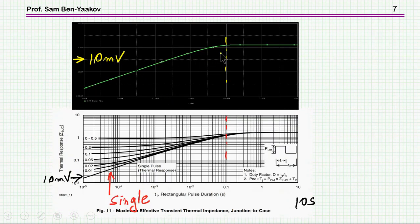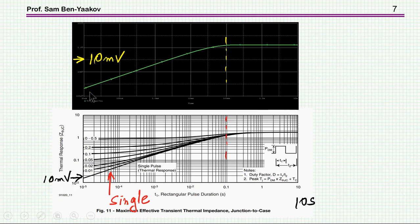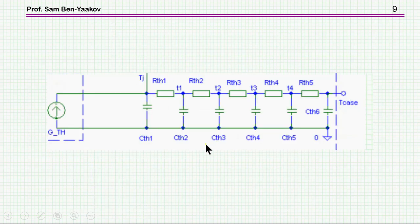Here is what I'm getting — it looks about the same and reaches the same value, but you'll notice that the beginning is not as accurate. In the real case at 10 microseconds it starts here, meaning at the beginning we have a shorter time constant, and only then the longer time constant comes into effect. So it's something like having one time constant and then another one. Probably the best way is to break it into a number of thermal resistances and capacitors and do a fitting to the line.